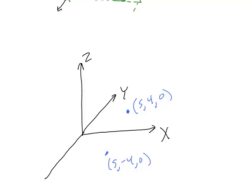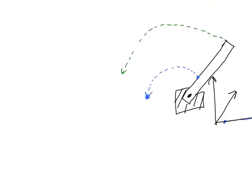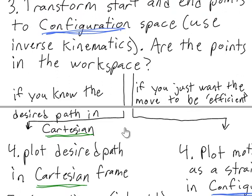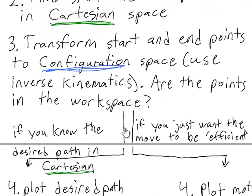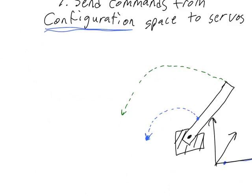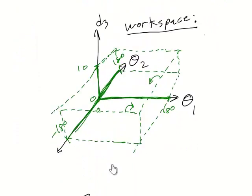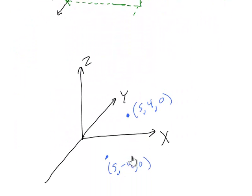Let's move on to step number 3. Step 3 is to transform the start and end points to configuration space — that is, from Cartesian space — using the inverse kinematics. I'm not going to derive the inverse kinematics here because we did that previously in robotics 1. So I'm going to go and get the inverse kinematics that have been derived previously and use them, writing them down here.